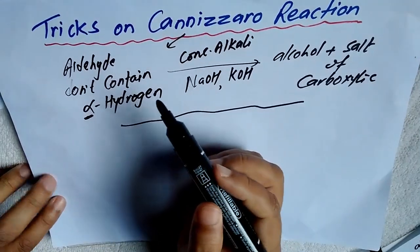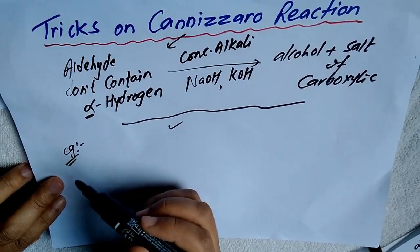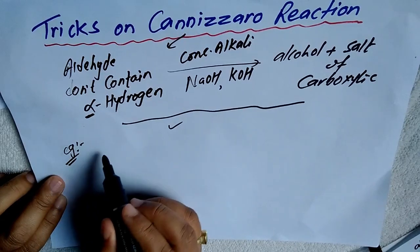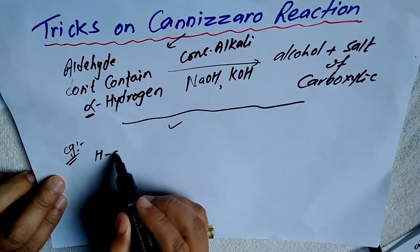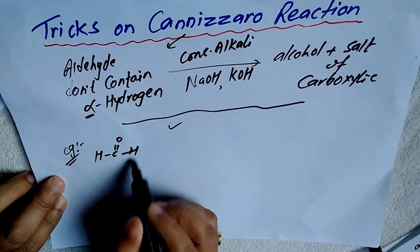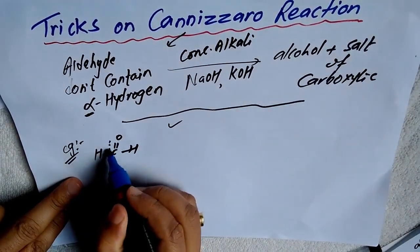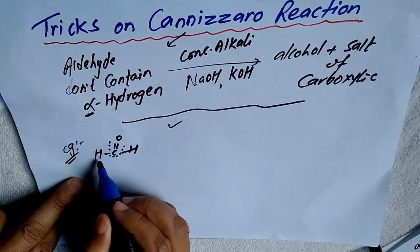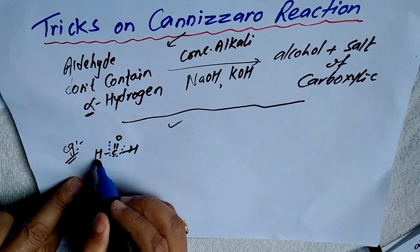Let us take an example of an aliphatic aldehyde which does not contain alpha hydrogen — that is HCHO (formaldehyde). Here, the carbonyl group is bonded with hydrogen and there is no carbon attached, so there is no alpha carbon and no alpha hydrogen.